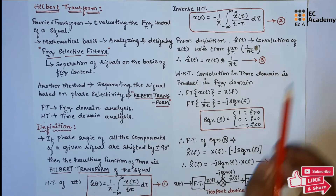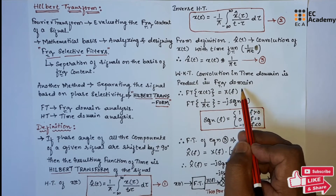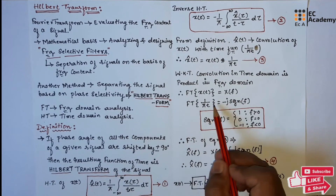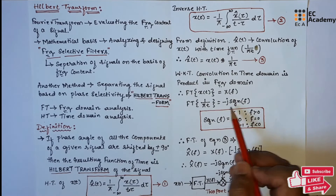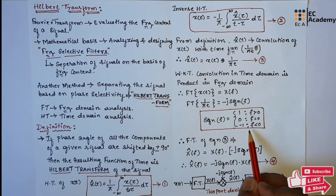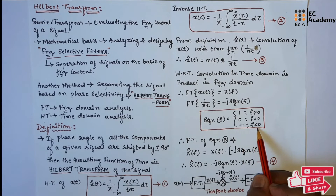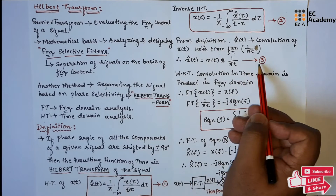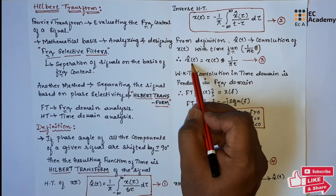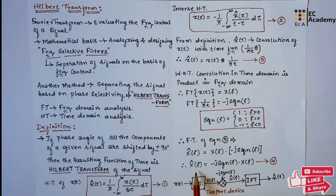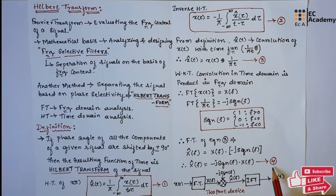We know that convolution in the time domain is multiplication in the frequency domain. So, taking the Fourier transform: the Fourier transform of x(t) is X(f), and the Fourier transform of 1/(πt) is −j·sgn(f), where the signum function sgn(f) equals 1 for f > 0, 0 for f = 0, and −1 for f < 0. Therefore, X̂(f) = −j·sgn(f)·X(f) — let us call this equation 4.